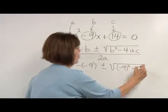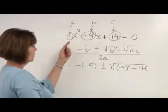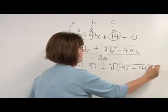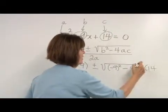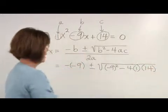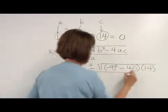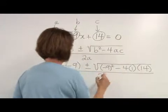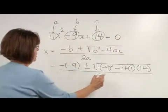And then subtract 4 times a is 1, c is 14. Keep those all under that radical sign, and then all over 2 times a, 2 times 1.